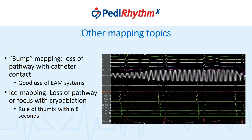Bump mapping: many of us have been in the situation where we're mapping a tachycardia and suddenly things disappear — pre-excitation disappears, a Mahaim pathway disappears, or a tachycardia terminates and can't be reinitiated. Just catheter pressure is enough to interrupt a substrate. This is a great application of electroanatomic mapping systems, because if you recognize that you've just bumped a pathway or a focus, you can mark that spot and then do an empiric ablation at that location.